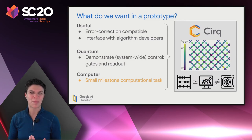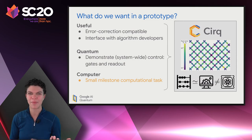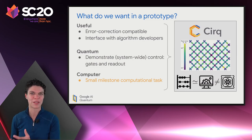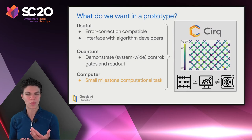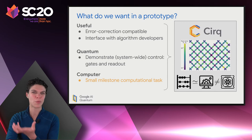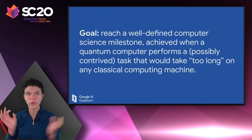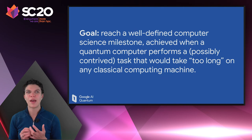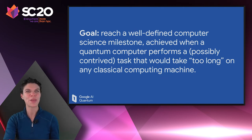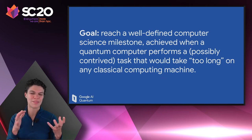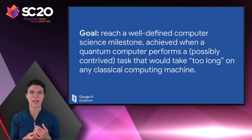Every classical computing device can efficiently simulate each other — be it an abacus or a supercomputer — but none of them can efficiently simulate a quantum computer. Quantum computation lives in a different complexity class. We set a goal: to reach a well-defined computer science milestone where a quantum computer performs a task that would be too resource-intensive for any classical computing machine. The task may be contrived, but the point is to test the limits of what a classical computer can do. Classical computation continues to evolve, but since the quantum computer lives in a different complexity world, they are really on different trajectories.